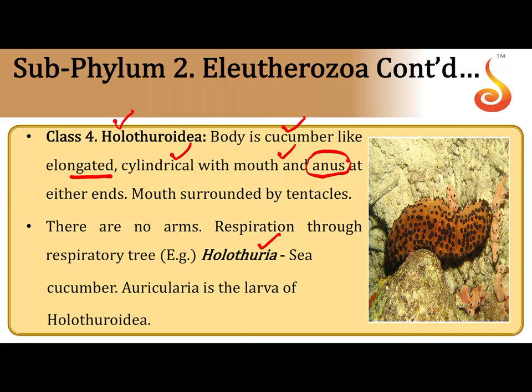There is a distinct mouth and a cloaca — a common opening for both the excretory and digestive systems. Many tentacles surround the mouth, and they do not have any arms. Inside the cloacal chamber they have a branched structure called the respiratory tree. Sea cucumbers draw seawater in through the cloaca, which passes through the respiratory tree to aid in respiration. The larva of the sea cucumber is called the auricularia larva.